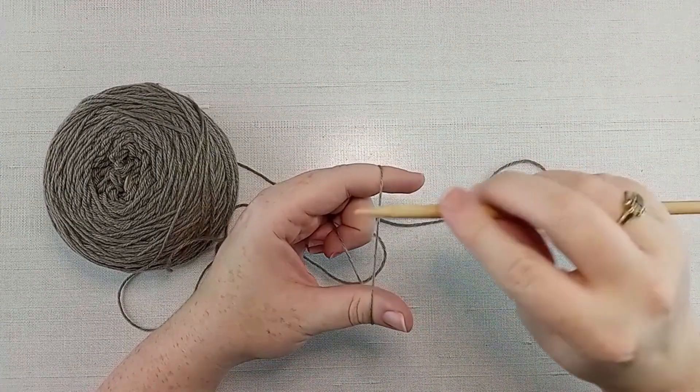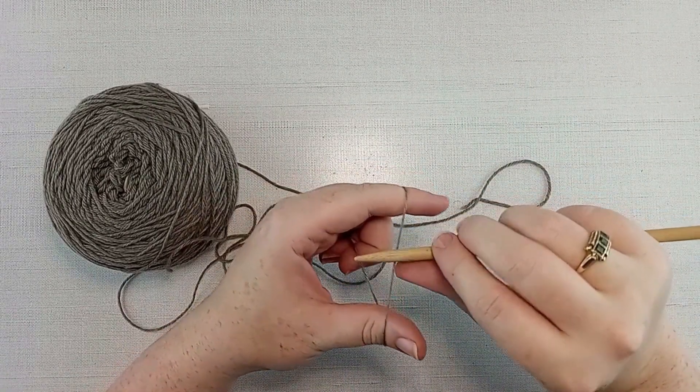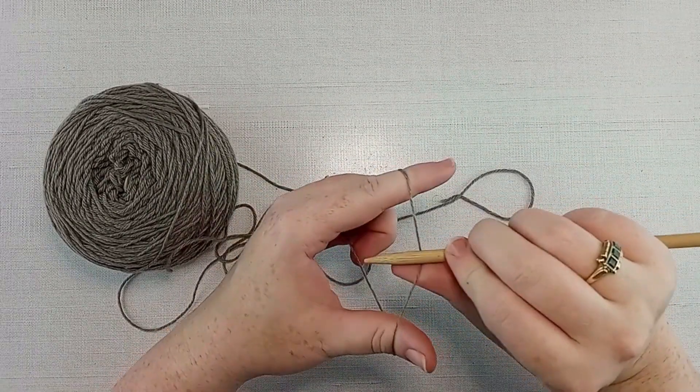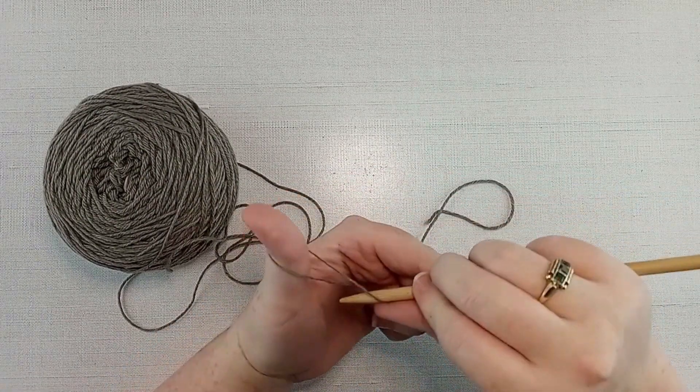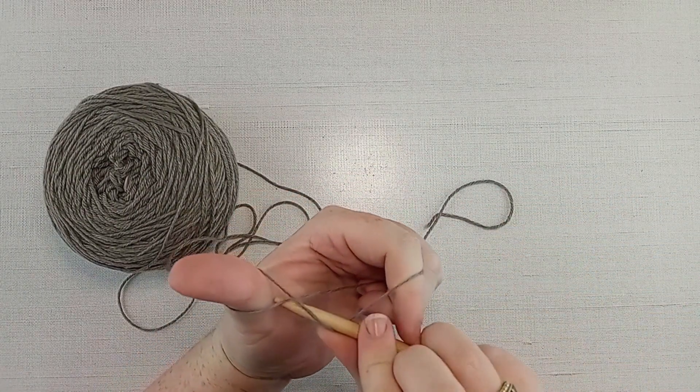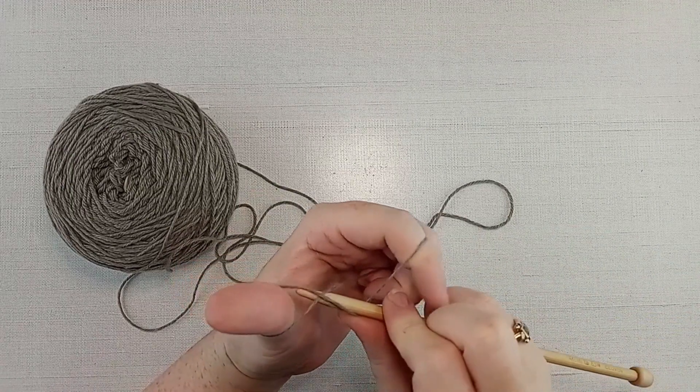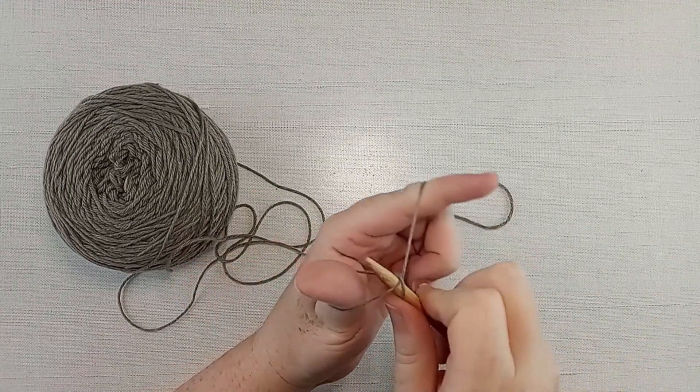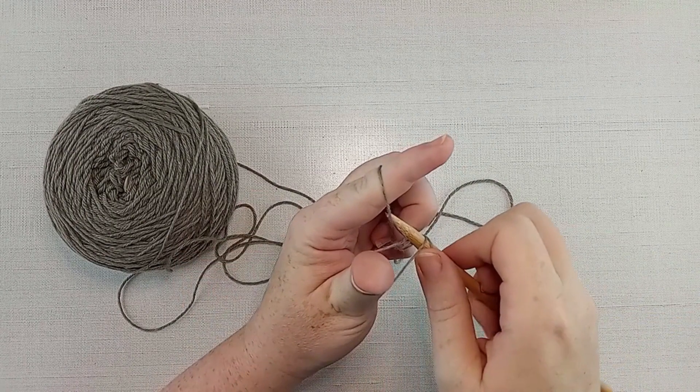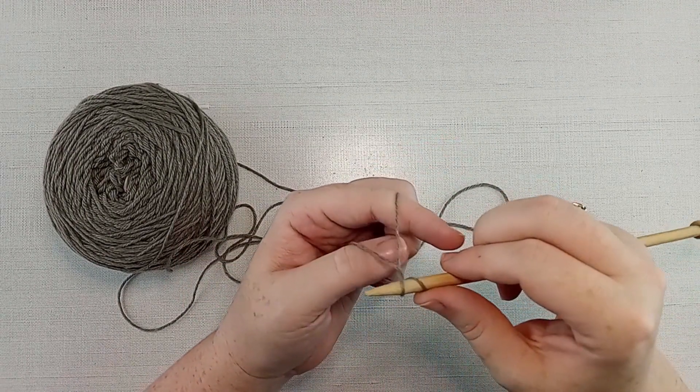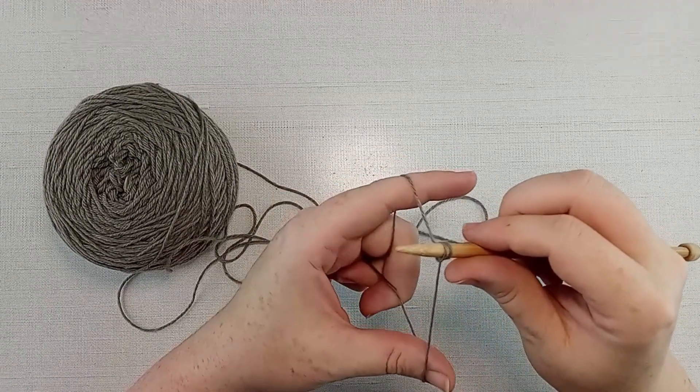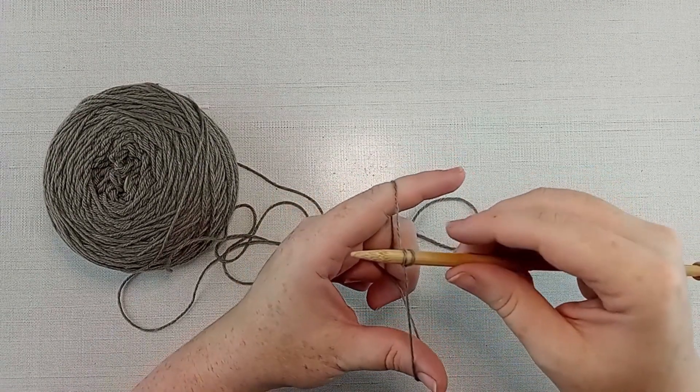We take our needle and we rest it on the top of our yarn. And now what we're going to do is rotate our thumb up. And if you look at the base of my thumb, you can see a hole now. We're going to stick our needle through that hole, wrap it around, grab that yarn off of our index finger, pull it through that hole, and tighten. We've got two stitches on the needle now.